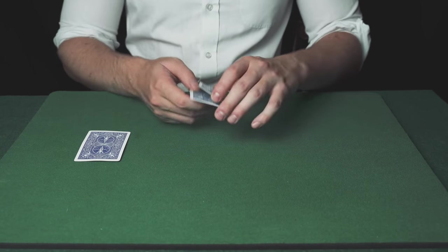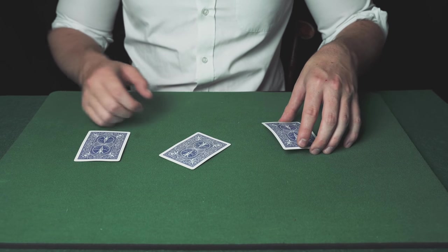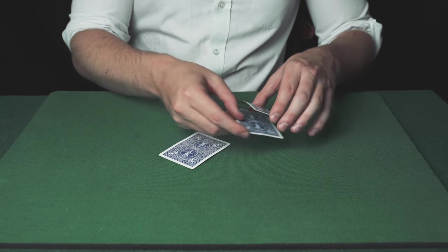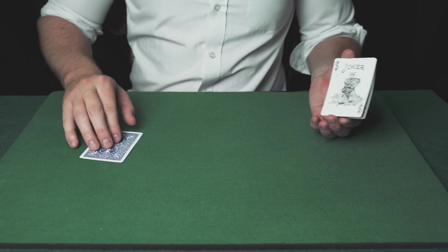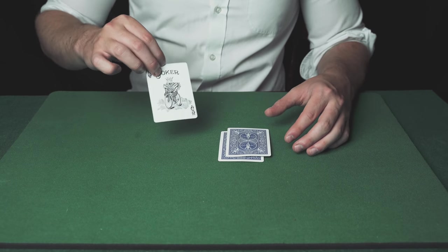For the fourth attempt, do another false throw and like before show that you have both jokers. Then turn over what they think is the queen that you've put to the side and show that it's also a joker.